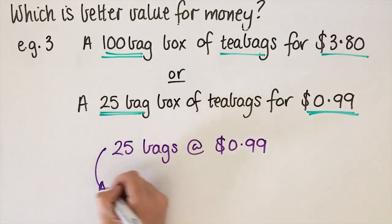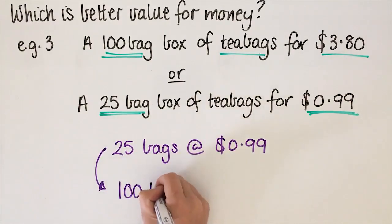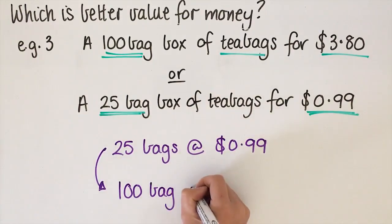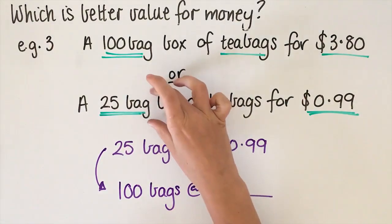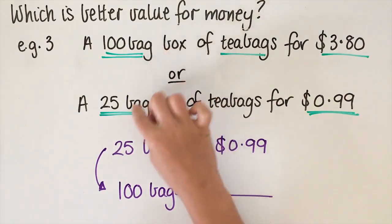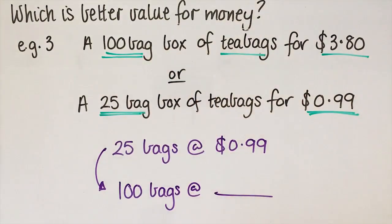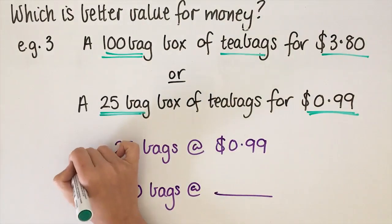And we want to turn it into 100 bags at a price that we don't know. So what we're asking is, is it better to buy four of these or one of these? Because 25 goes into that four times.